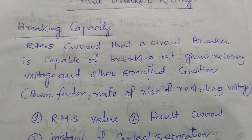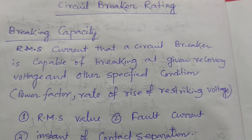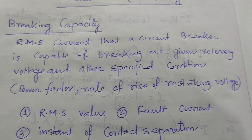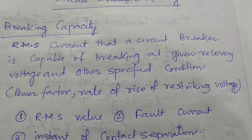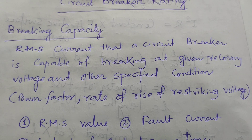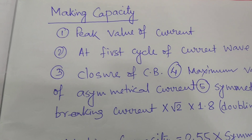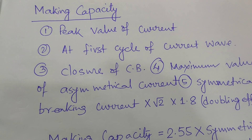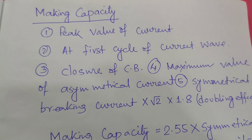Let's start about the Breaking Capacity. Breaking means when some fault has occurred in the system and the Circuit Breaker operates to open — that is called the Breaking of the Circuit Breaker. It has a capacity we will discuss. What is the Making Capacity? When in the fault condition or normal condition, if we close the Circuit Breaker, that operation is called the Making.